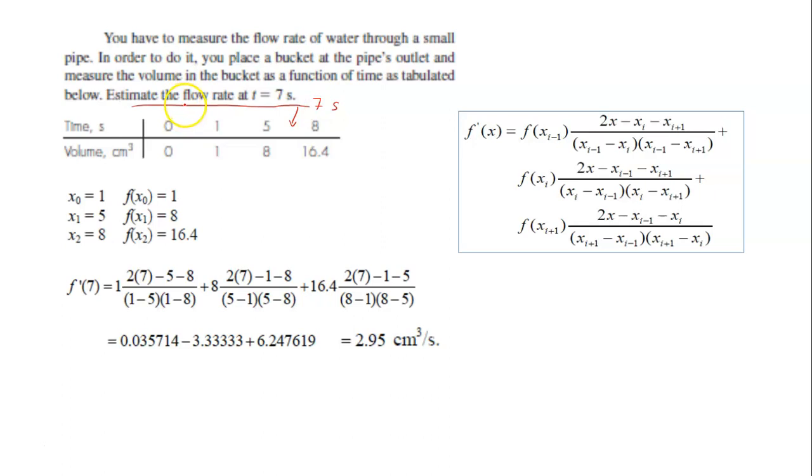Automatically, when they ask for flow rate and given volume and time, you know that you have to do differentiation. If you differentiate the volume over time, you will get a flow rate, which is in centimeter cubed per second.